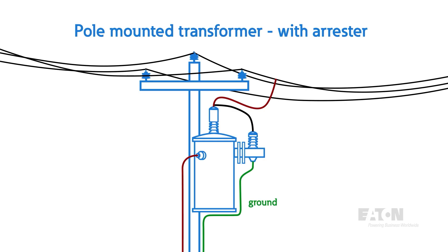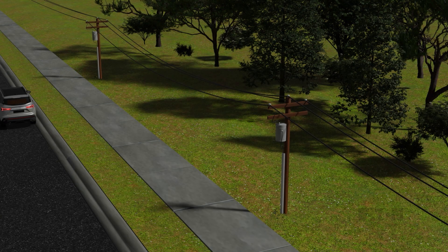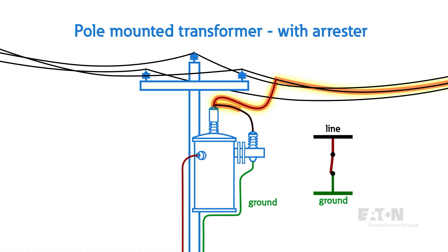For a transformer, the line lead will connect at the bushing and the load side is then connected to ground. Because of the semi-conductive behavior of the MOV blocks, the arrestor acts as an open switch for that path to ground. Utility engineers will select arrestors with a voltage threshold far above the system voltage to ensure that under normal circumstances, the arrestor never closes in to create unnecessary ground faults. However, when lightning strikes occur, the traveling overvoltage wave will cause the arrestor to conduct and provide a bypass path away from the equipment directly to ground.